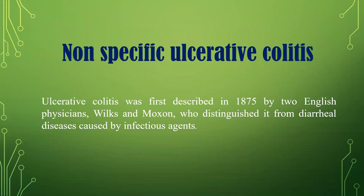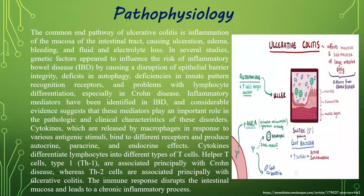Ulcerative colitis was first described in 1875 by two English physicians, Wilks and Moxon, who distinguished it from the diarrheal disease caused by infectious agents. The common pathway of ulcerative colitis is inflammation of the mucosa of the intestinal tract causing ulceration, edema, bleeding, and fluid and electrolyte loss. Genetic factors appear to implicate the risk of IBD by causing disruption of epithelial barrier integrity and deficits in autophagy, deficiency in innate pattern recognition receptors, and problems with lymphocyte differentiation, especially in Crohn's disease.